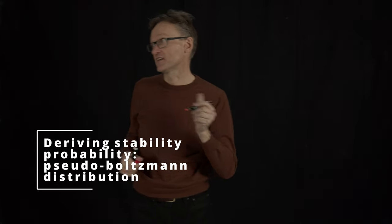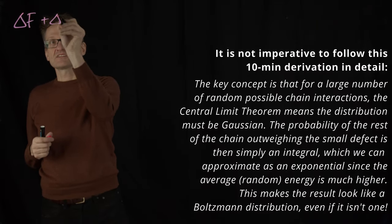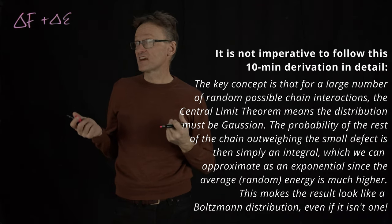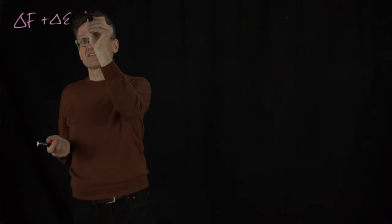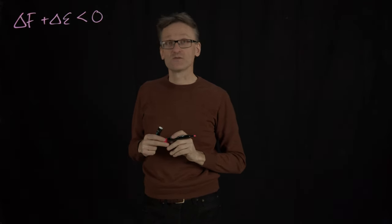If the total energy of the chain is delta F for the rest of the chain plus delta epsilon, and if I ask myself what is the likelihood that this forms a protein, for that to happen their sum must be smaller than zero, otherwise the free energy would be positive.